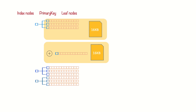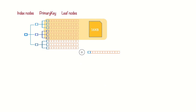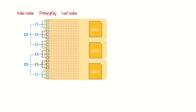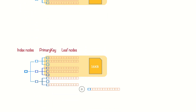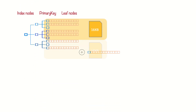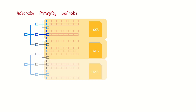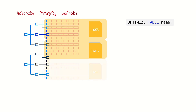A page split can cause a table to use more space on disk than necessary. Similarly, the speed of inserts depends heavily on insertion order. Inserting rows in primary key order is the fastest way to load data into an InnoDB table. If you didn't load the rows in primary key order, it might be a good idea to reorganize the table with OPTIMIZE TABLE after loading a lot of data. This way, table fragmentation is removed.